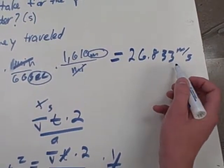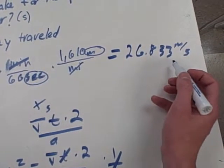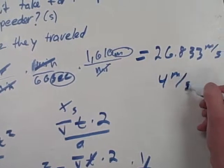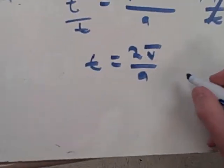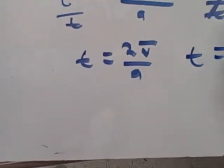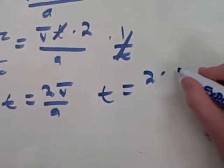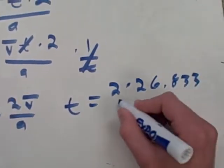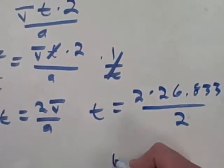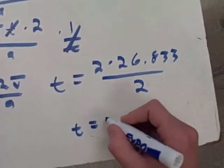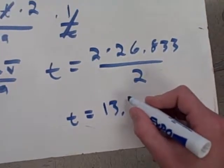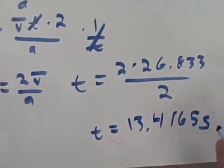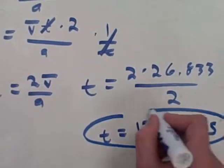You know the acceleration is 4 meters per second squared, so now you would just plug it in. So t equals two times velocity divided by acceleration, and t is going to end up 13.4165 seconds. That will be your answer to part a.